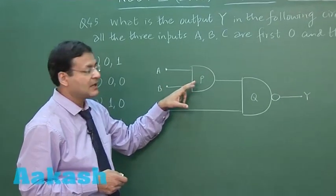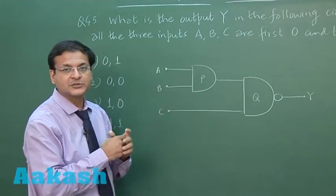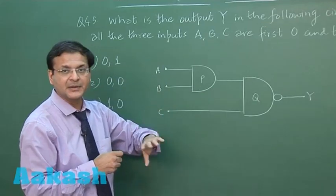First try to recognize what are the components which have been given. Here this is AND gate and here this is NAND gate. In AND gate the inputs are multiplied. In NAND gate it is multiplied and then reversed.